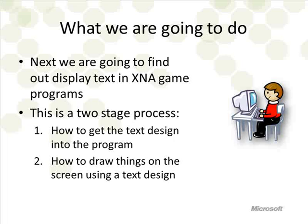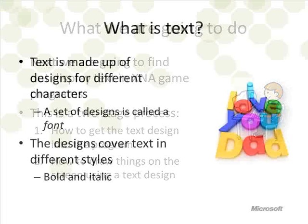Getting text into an XNA game program is two-stage: the first stage is getting the text into the program, and the second thing we do is use that to actually draw stuff. So there are two steps — we have to fetch something and then use it to do the job.